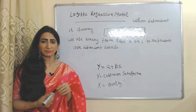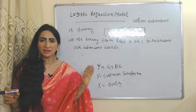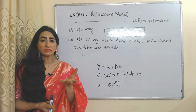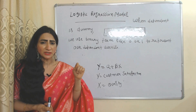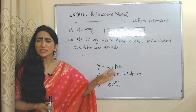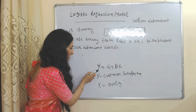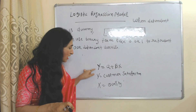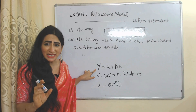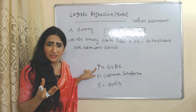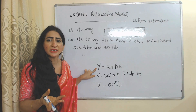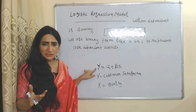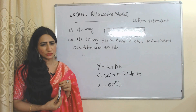We use a logistic regression model when our dependent variable is a dummy variable. A dummy dependent variable means we cannot measure the dependent variable in terms of numbers, so we use binary terms — 0 or 1 — to measure it. For example, customer satisfaction is a dependent variable. We cannot measure customer satisfaction in terms of numbers the way we can measure demand or price. So the dependent variable is dummy. In order to measure it, we assign binary terms: if the customer is satisfied, we use 1; if not satisfied, we use 0. This concludes the overview of regression models.